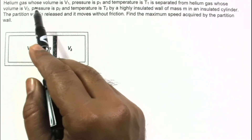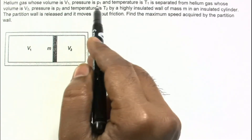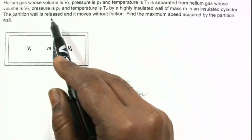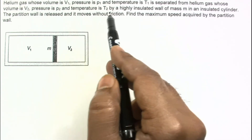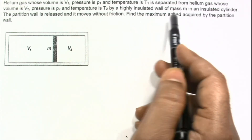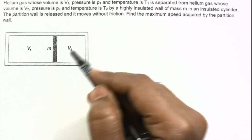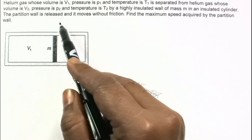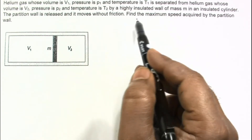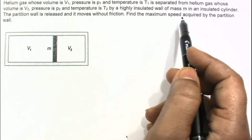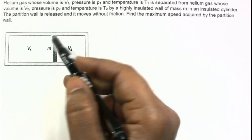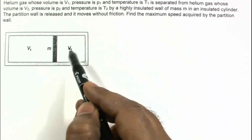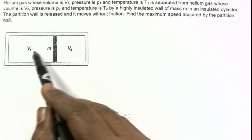In the problem, helium gas has volume V1, pressure P1, and temperature T1. It is separated from another helium gas whose volume is V2, pressure P2, and temperature T2, by a highly insulated wall of mass m inside an insulated cylinder. The partition wall is released and moves without friction. We need to find the maximum speed acquired by the partition wall. The entire system is thermally insulated, so there is no heat exchange.